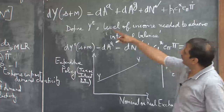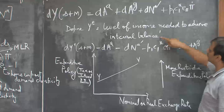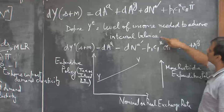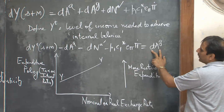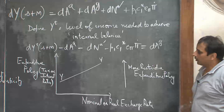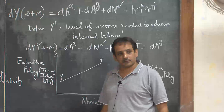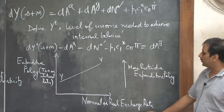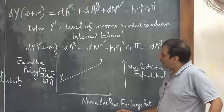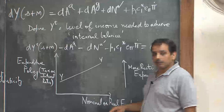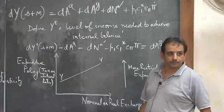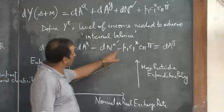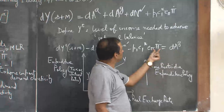Working on this income equation and defining y_T to be the level of income needed to achieve the internal balance, you can work out a relationship between the policy-induced expenditures and the other terms. If you are plotting expenditure policy on the y-axis — that is taxes or interest rates — and nominal or real exchange rates on the x-axis, then you will get a curve which shows different combinations of expenditure policy and nominal exchange rate which will give you internal balance.